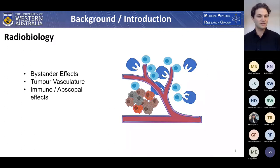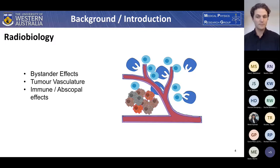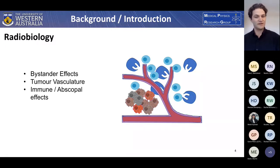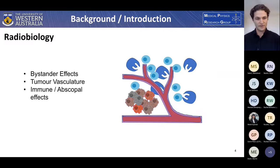The radiobiology that tries to explain this involves three effects. The first is the bystander effect, which relates to the observation that partially irradiated cells can experience effects such as DNA damage or cell death in response to signals received from the peak regions. With respect to tumor vasculature, it is the high peak dose characteristic of grid therapy that is postulated to cause endothelial apoptosis in the tumor vasculature, to a greater extent than in conventional therapies. There is some debate whether this is a good thing or not.